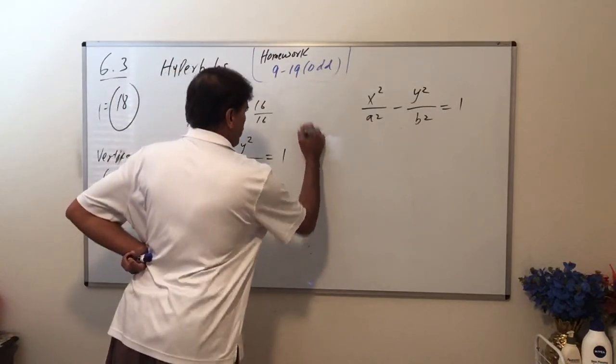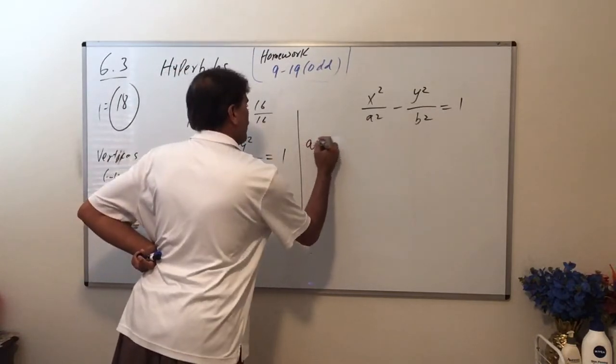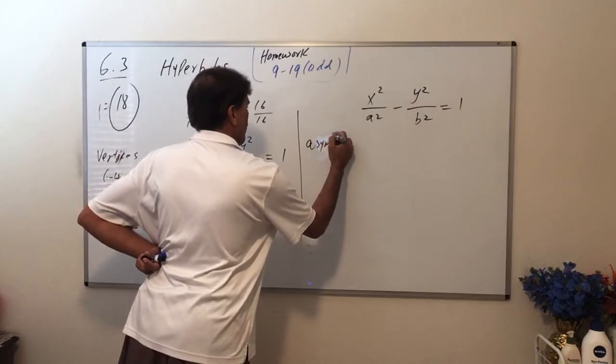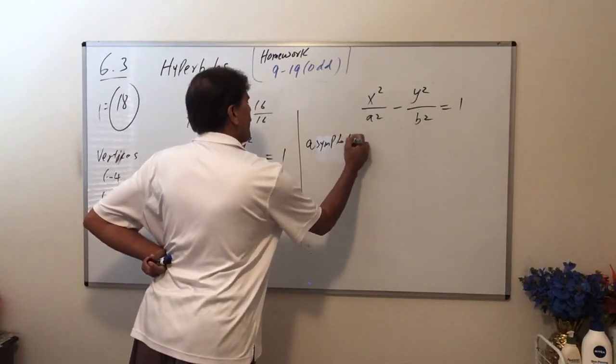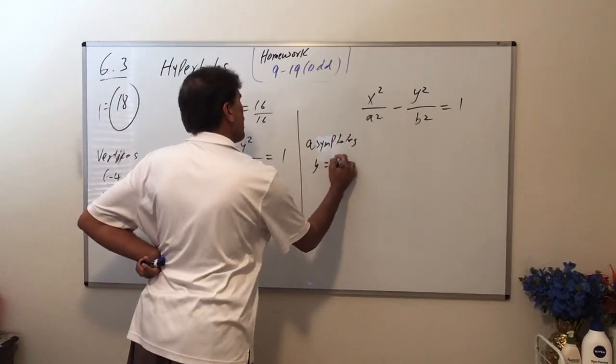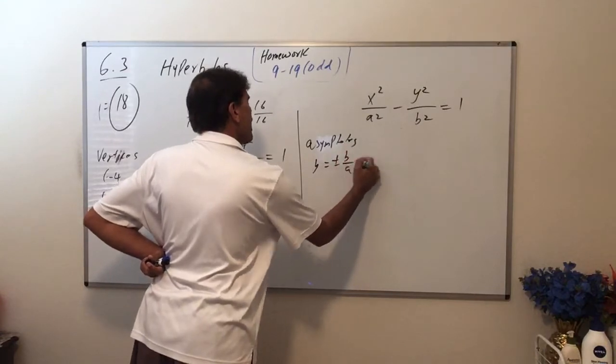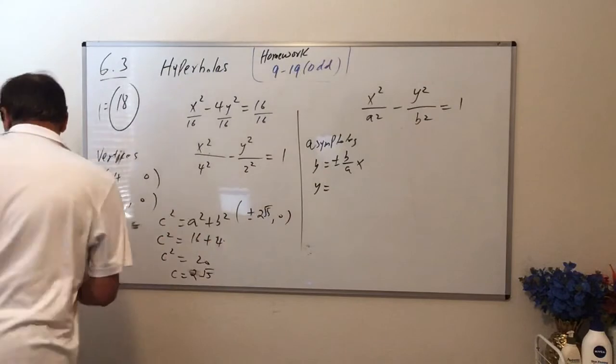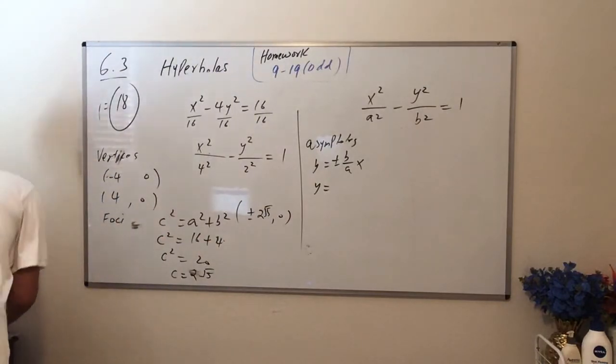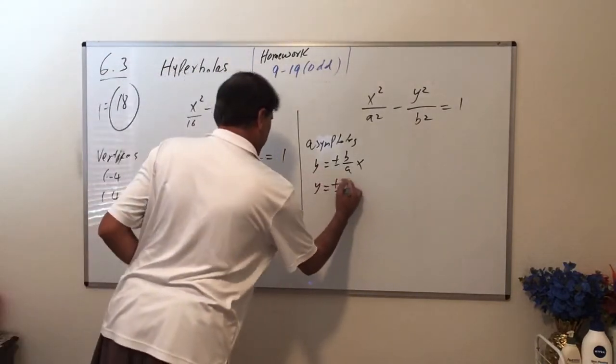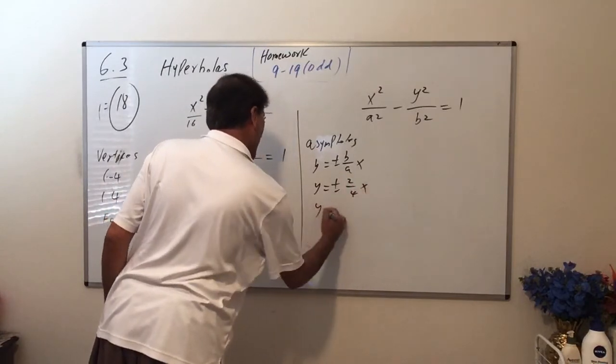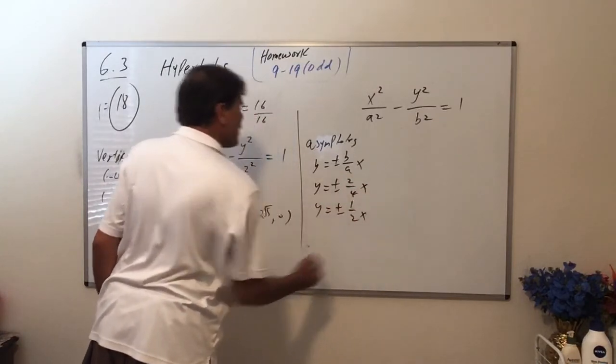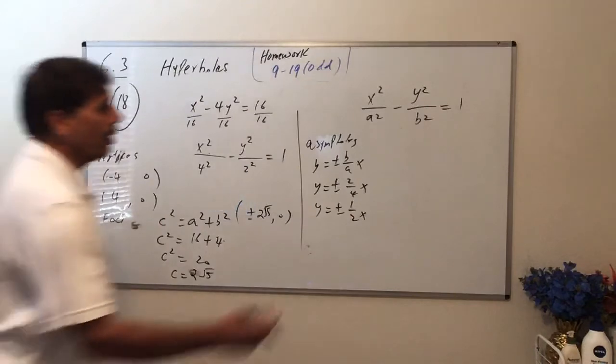Okay, so let's graph. Also asymptotes: y equals plus or minus b over a x. In this case, b is 2 and a is 4, so in this case it's going to be 2 over 4, which is y equals plus or minus half x. That's going to be your asymptote.